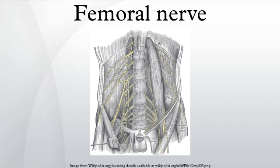Posterior division: The posterior division muscular branches supply the four parts of the quadriceps femoris. The branch to the rectus femoris enters the upper part of the deep surface of the muscle, and supplies a filament to the hip joint. The branch to the vastus lateralis, of large size, accompanies the descending branch of the lateral femoral circumflex artery to the lower part of the muscle, and gives off an articular filament to the knee joint.